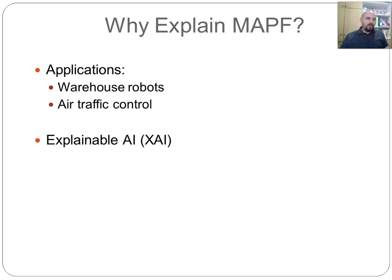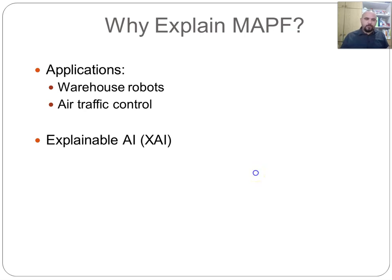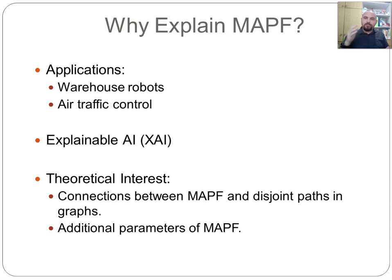In explainable AI, we typically try to explain classifiers or plans devised by very complicated algorithms—a lot in learning and deep learning—where we don't actually understand why the controller does what it does. What we suggest here is to approach explainable AI for a problem that we understand really well. We know how multi-agent pathfinding works, we know how to find plans, we understand the plans when they're found. The emphasis is to convince the human very quickly that the paths are indeed not colliding. There's also a theoretical interest because it shows a nice connection between multi-agent pathfinding and the problem of finding disjoint paths in graphs, and it gives another parameter for evaluating a plan, namely the number of segments needed when you decompose it.